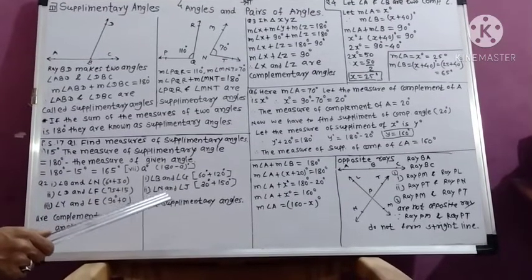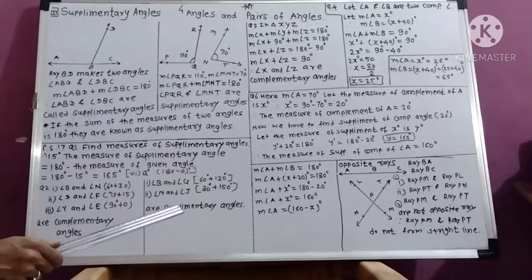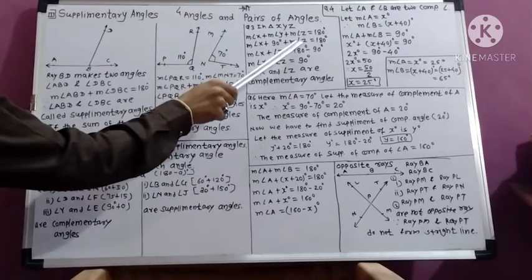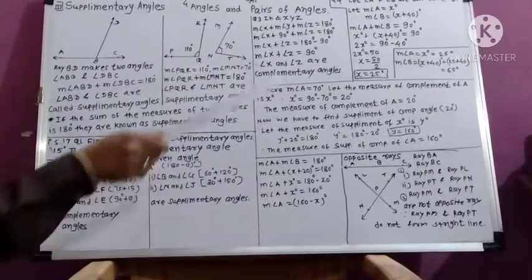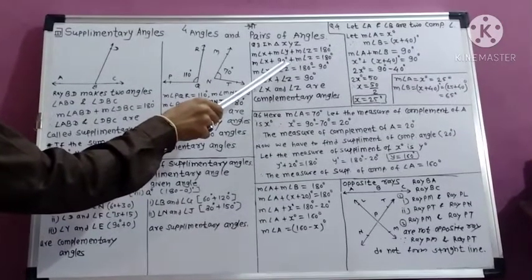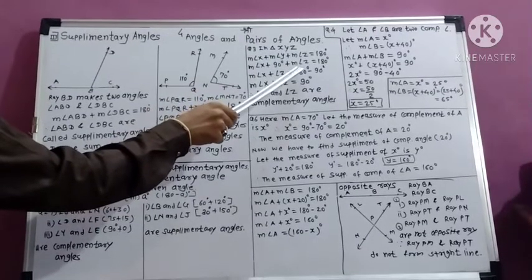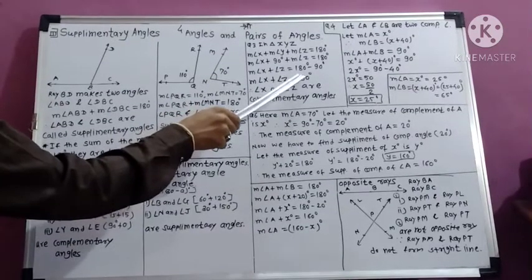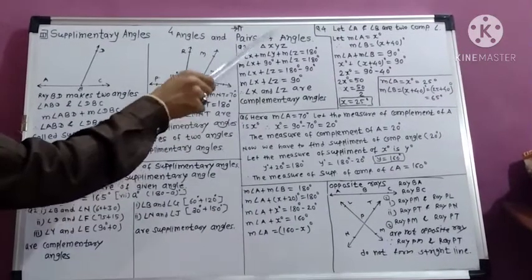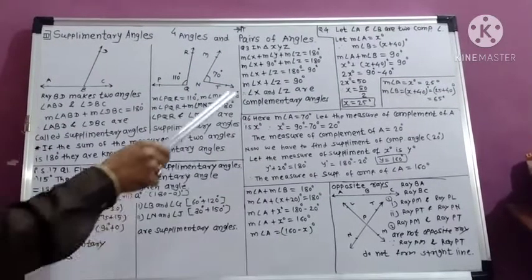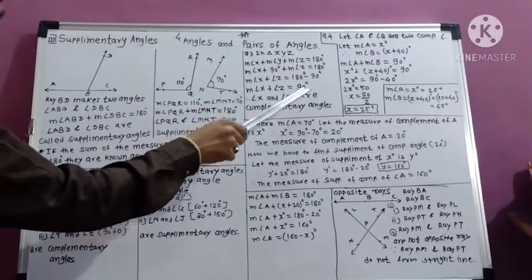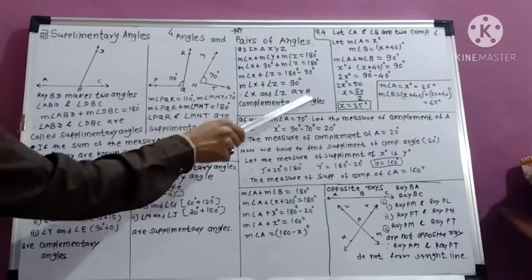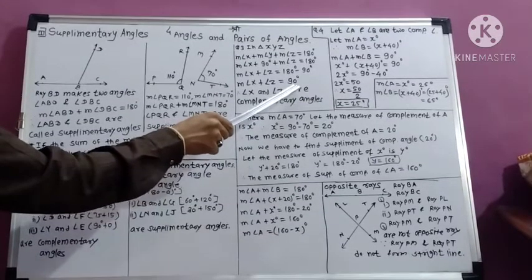In triangle XYZ, the sum of angles X, Y, and Z equals 180 degrees. Measure of angle Y is 90 degrees — this is given. So measure of angle X plus measure of angle Z equals 180 degrees minus 90 degrees, which equals 90 degrees. Therefore, angle X and angle Z are complementary angles because the sum of their measures is 90 degrees.